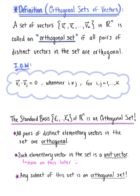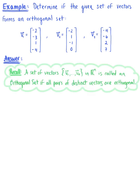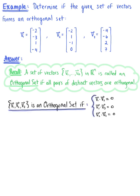So let's continue to explore these possibilities with the following example: determine if the given set of vectors forms an orthogonal set. Recalling the definition, a set of vectors is called an orthogonal set if all pairs of distinct vectors are orthogonal. So the set of vectors v sub 1 through v sub 3 is an orthogonal set if all pairs of distinct vectors have a dot product equal to 0.